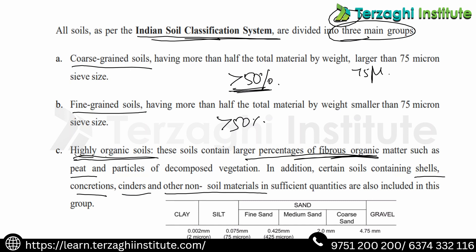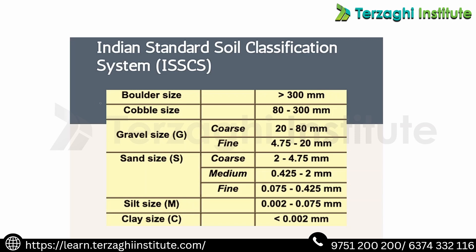Highly organic soils contain extra organic elements. The classification includes clay, silt, fine sand, medium sand, coarse sand, and gravel. Clay has a particle size less than 0.002 mm (2 microns). Silt ranges up to 0.075 mm (75 microns). Fine sand, medium sand, coarse sand, and gravel follow in increasing size order.